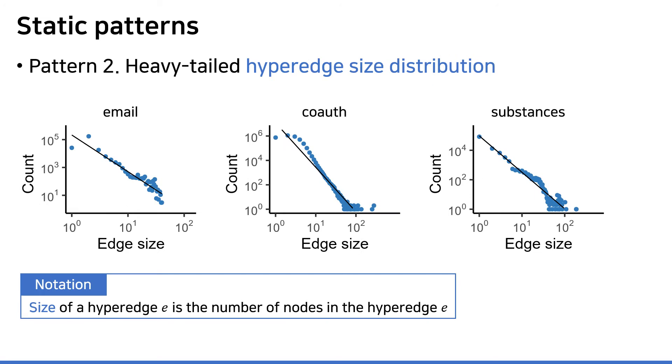The second static pattern we investigate is how the size of hyperedges are distributed, where the size of a hyperedge is simply the number of nodes in the hyperedge. We observed that this quantity also follows a heavy-tail distribution. Similar to degree distribution, the log-likelihood ratio test implies that the truncated power-law distribution is the best description available.